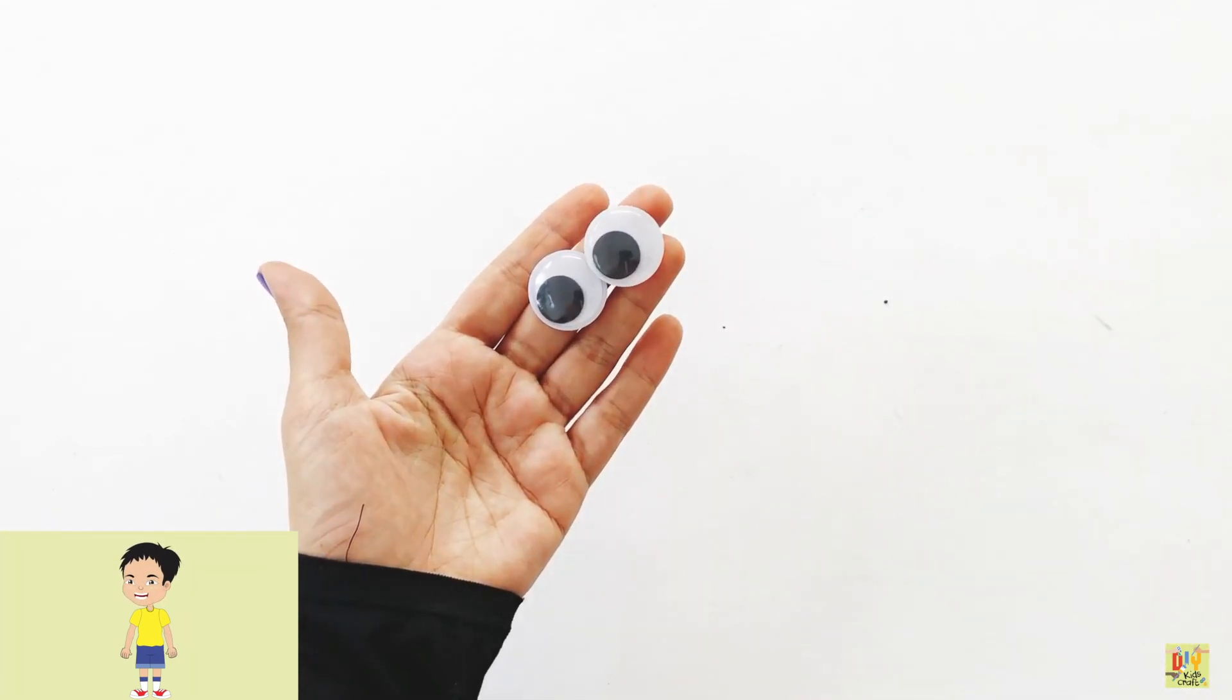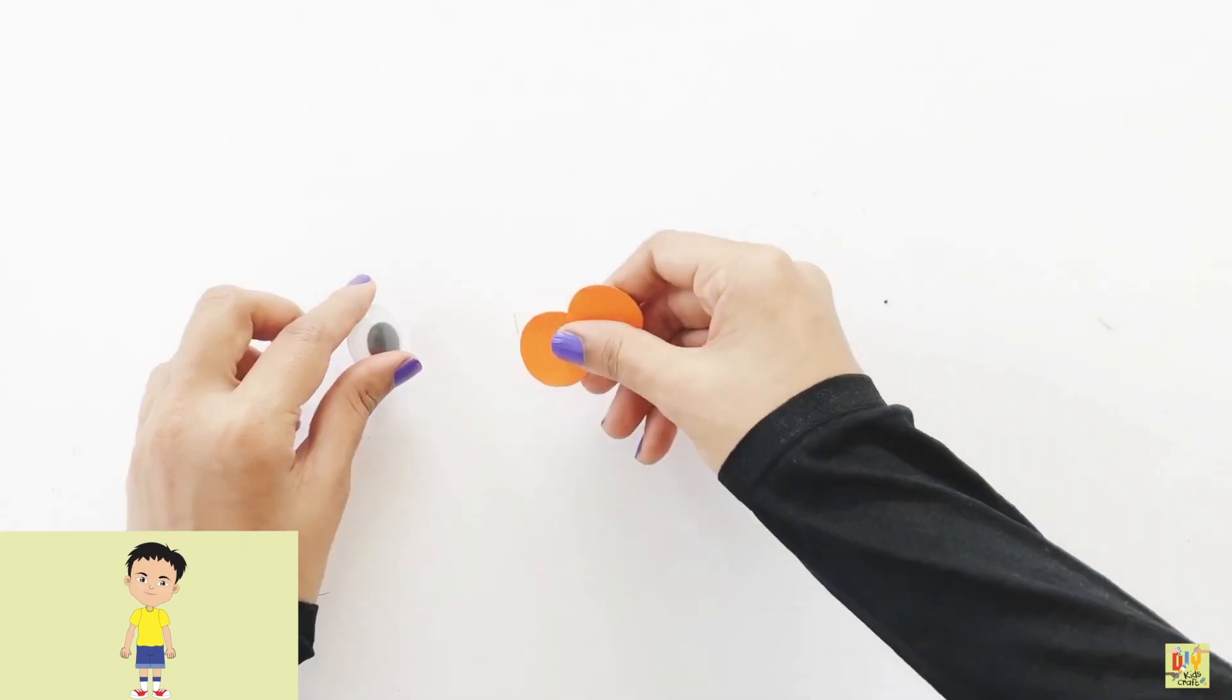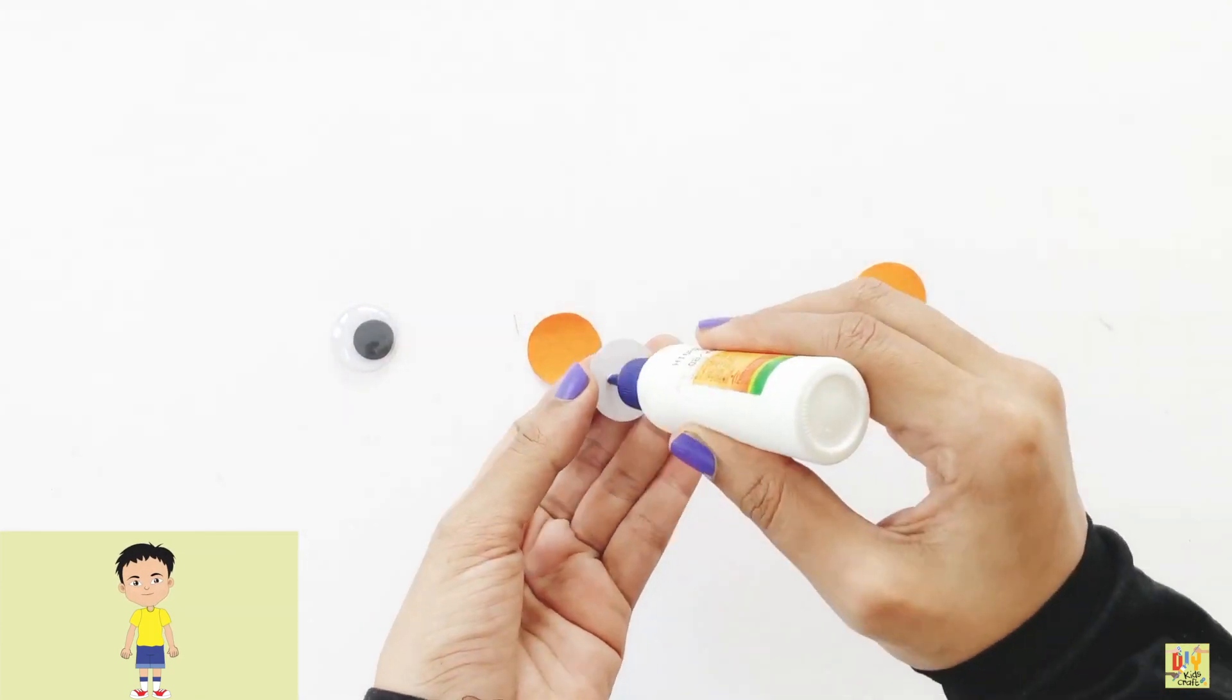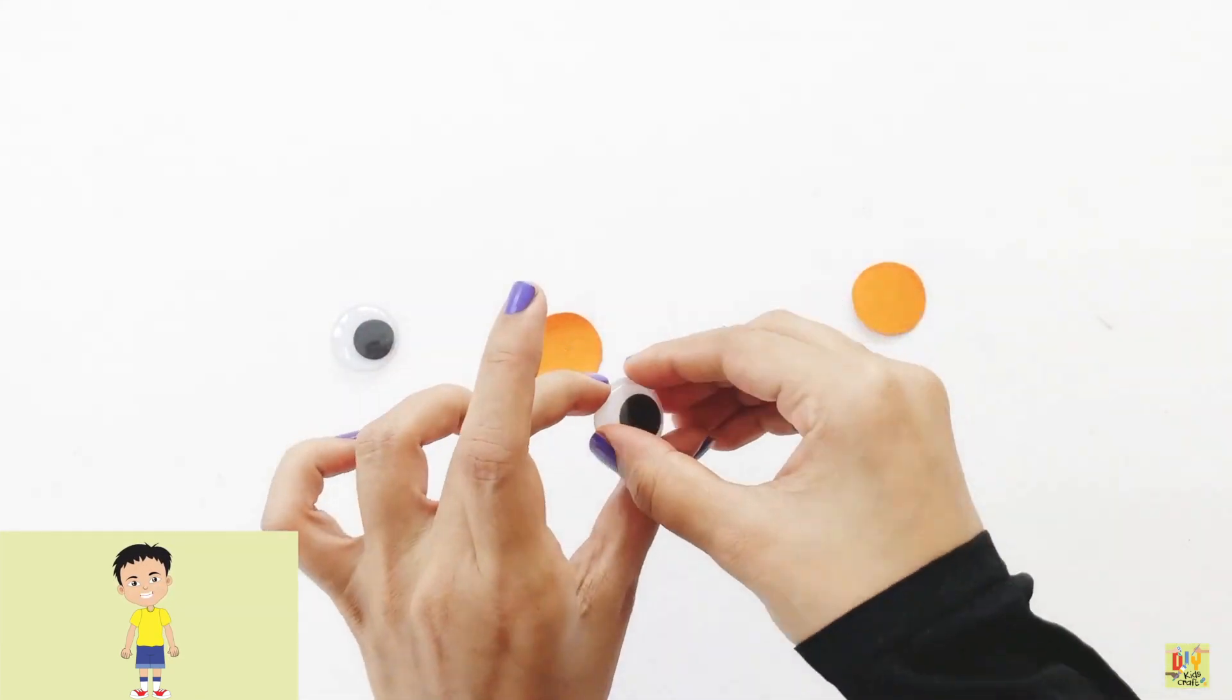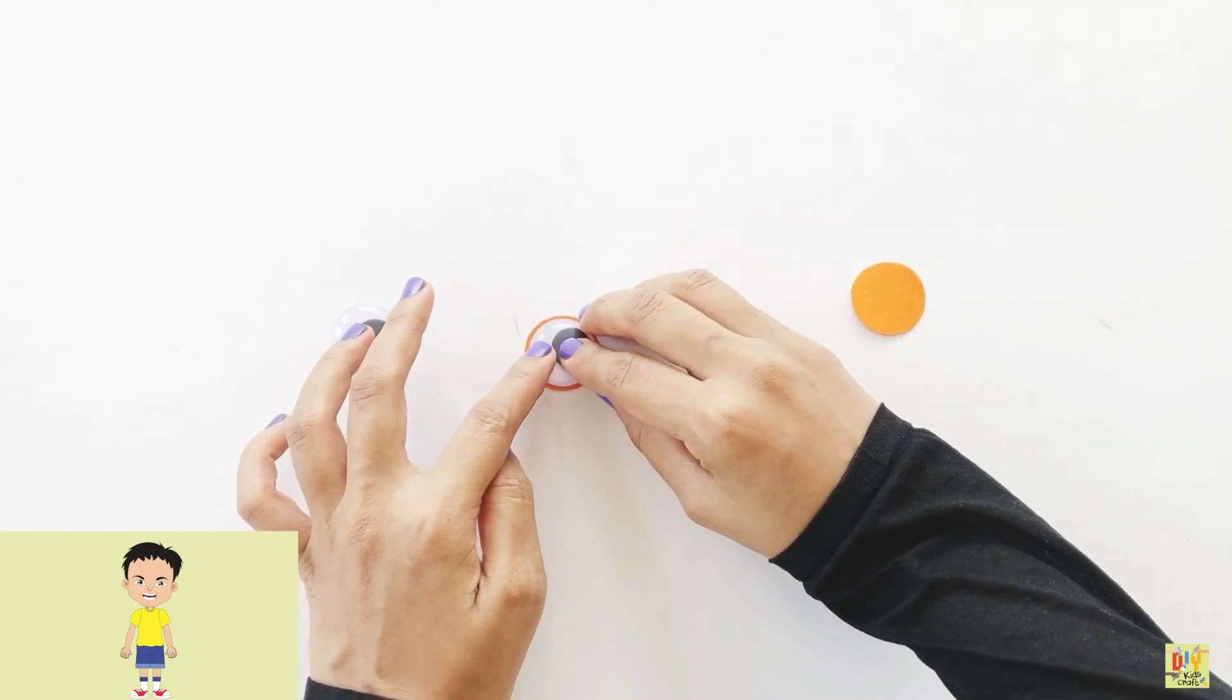Then we need to place the googly eyes on a small circle. Don't forget to use glue.